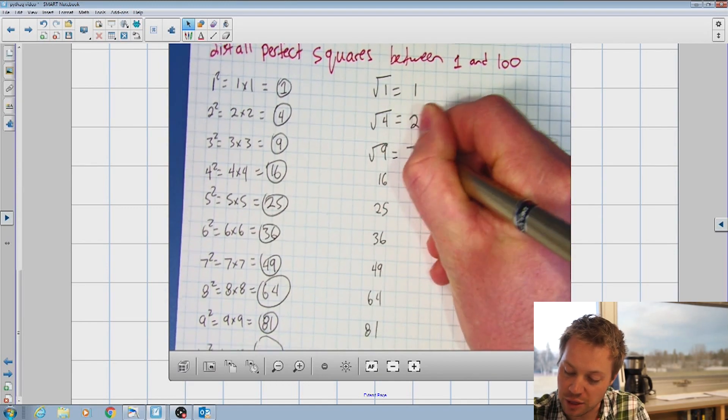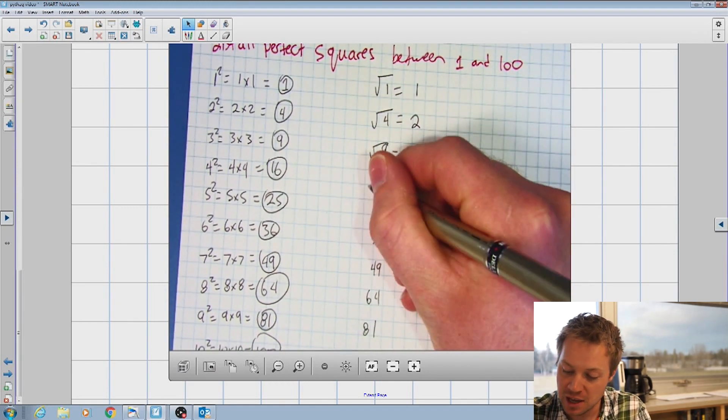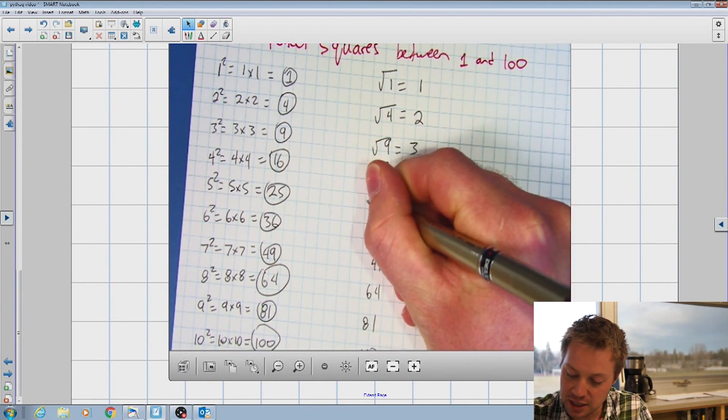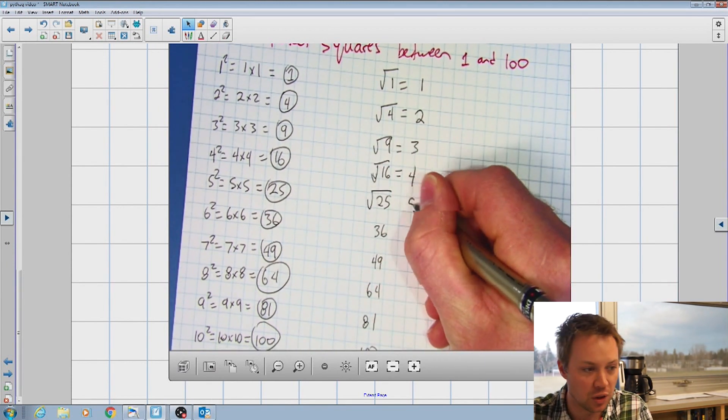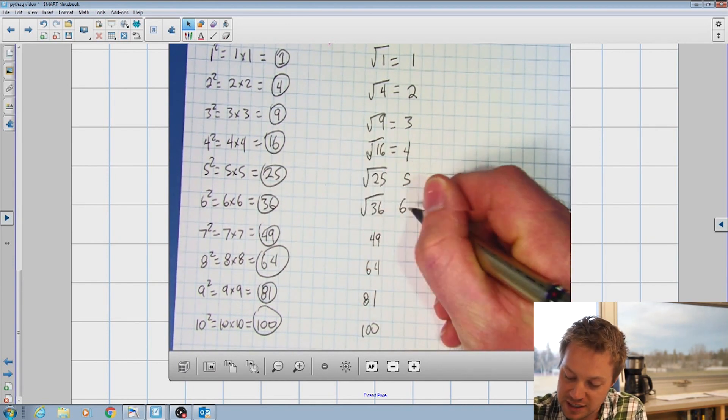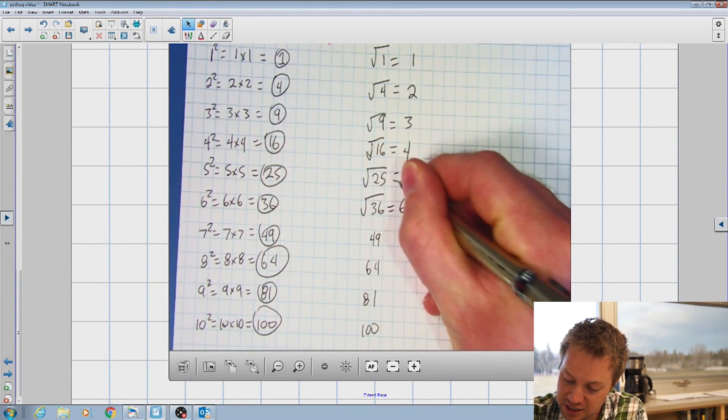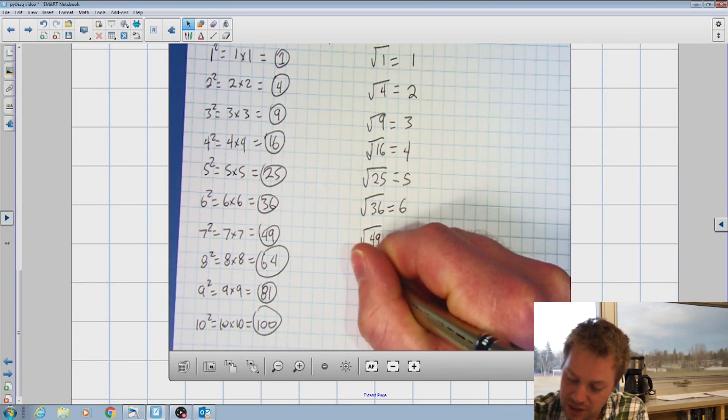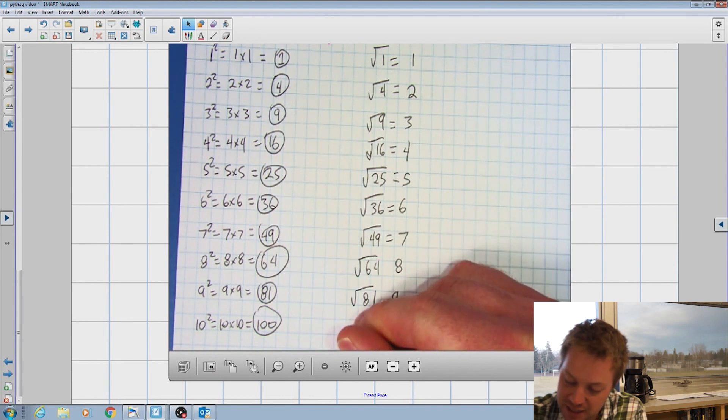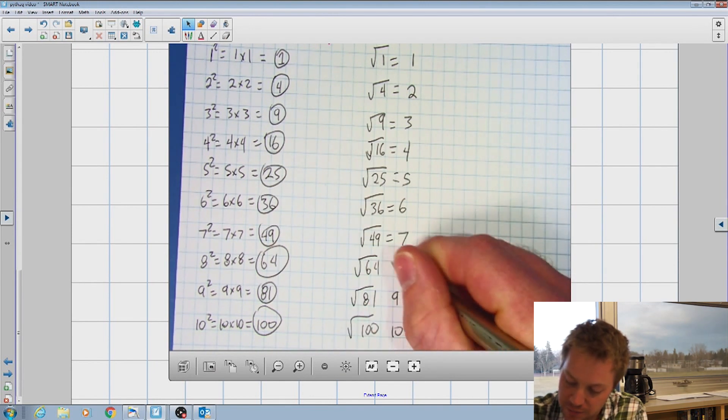If I take the square root of nine, I know that three times three is nine. Square root of 16, I know that four times four is 16. Square root of 25, I know that five times five is 25. Square root of 36, I know that six times six is 36. Square root of 49, seven. Square root of 64 is eight. Square root of 81 is nine. Square root of 100 is 10.